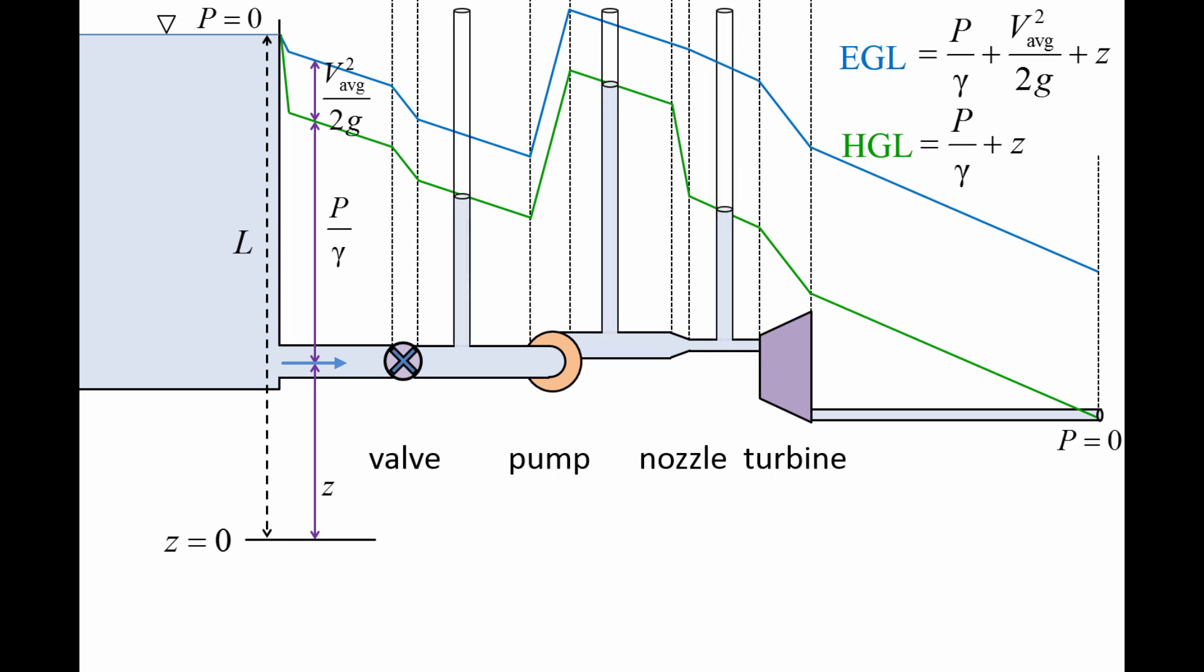The HGL curve can be observed by creating a series of static pressure taps along the pipe system. The height of the liquid line in the pressure taps will be equal to the hydraulic grade line at those points.